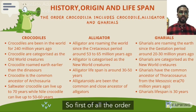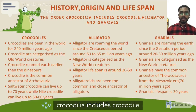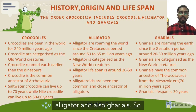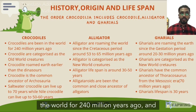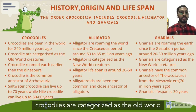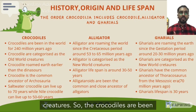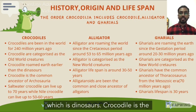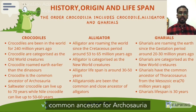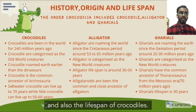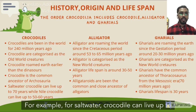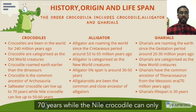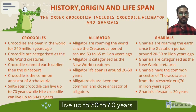The order Crocodilia includes Crocodile, Alligator and also Gharials. Crocodiles have been in the world for 240 million years and are categorized as Old World Creatures, roaming the earth earlier than the dinosaurs. Crocodile is the common ancestor for Arcosauria. For lifespan, saltwater crocodiles can live up to 70 years, while the Nile Crocodile can live up to 50 to 60 years.